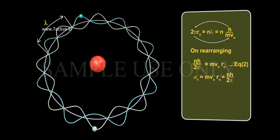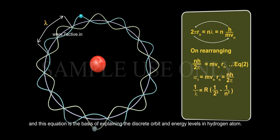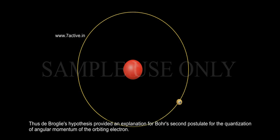αn equals to MVnRn equals to nh by 2π. 1 by λ equals to R of (1 by 2 square minus 1 by n square). And this equation is the basis of explaining the discrete orbit and energy levels in hydrogen atom.